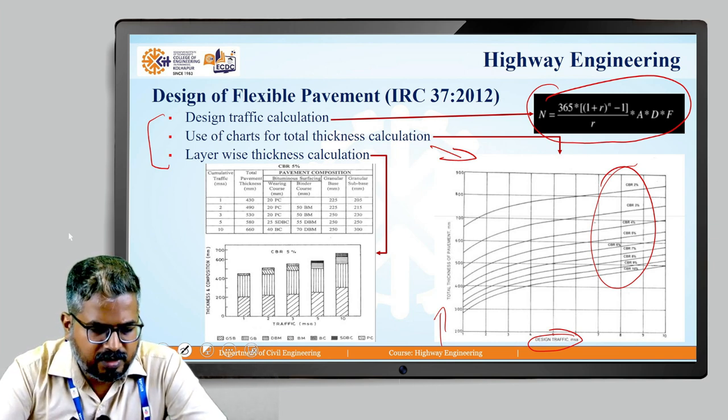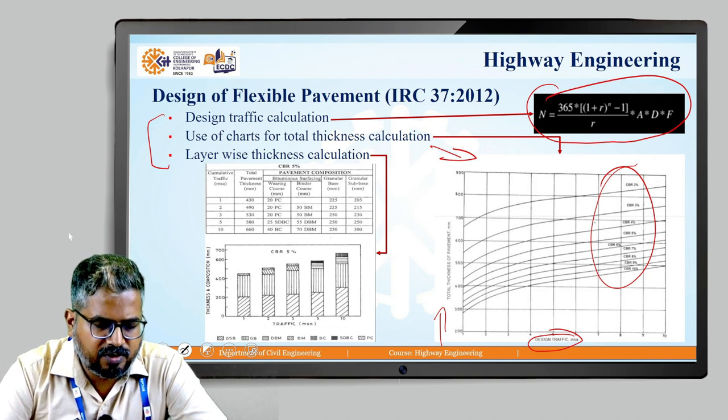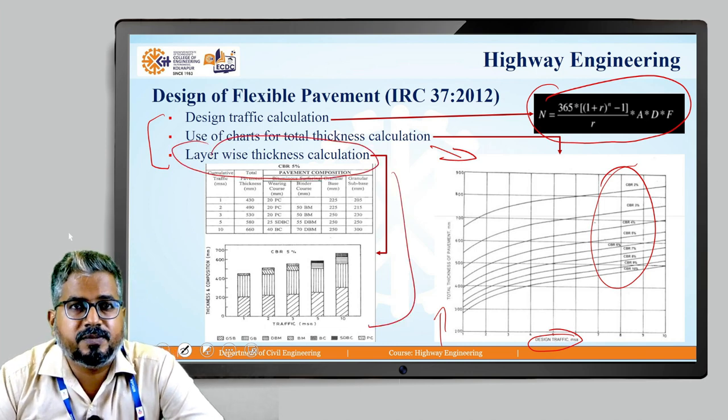After obtaining the design traffic value N in MSA, the total thickness of the pavement is found from the IRC chart, and then the layer-wise thickness is obtained based on the following chart.